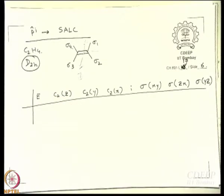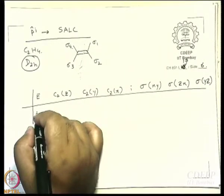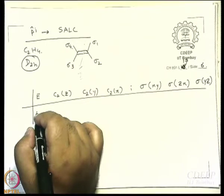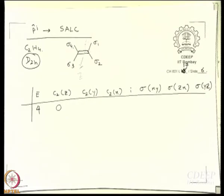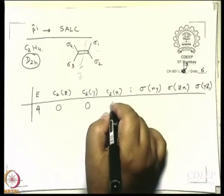So now if I use sigma 1, sigma 2, sigma 3, sigma 4 as the basis, what is the representation I generate? What is the character of E? My basis is sigma 1, sigma 2, sigma 3, sigma 4 — so it is 4. E is 4. What about C2z? The character of C2z is 0, because the functions move. Similarly for C2y, C2x, and i — everything is 0.